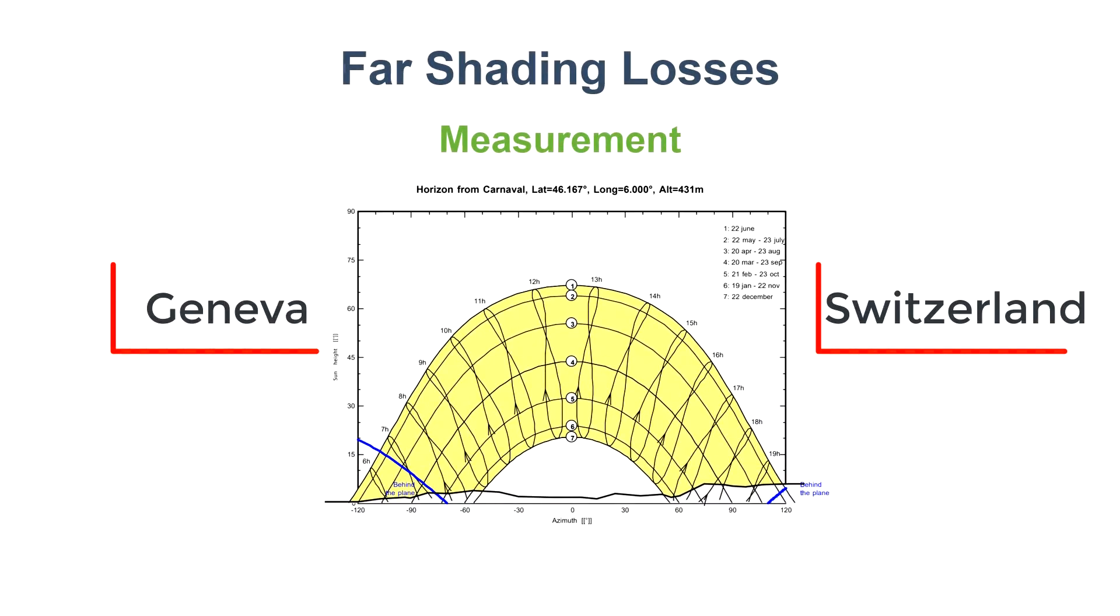This example is a site in Geneva, Switzerland. So mostly during early morning and evening times throughout the year, the far shading affects the solar energy generation.